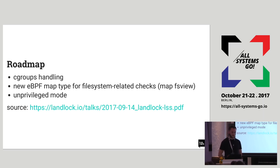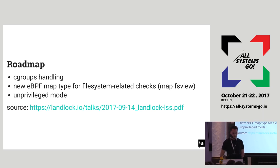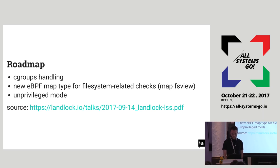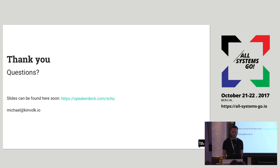The filesystem map type is also a big blocker for why Landlock can't fully work today — the BPF system doesn't yet bring the right tools to check for a file's path or similar, because you never get the full picture. You don't know which mount namespace you're working in, so you can never be sure which file is actually being used. The unprivileged mode is also yet to be done.